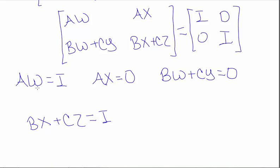So the first one I'll deal with is AW equal to I. Now I know that A is square. And the invertible matrix theorem says that if A is square and it multiplies by something to get the identity, that it is invertible. So I have that W is equal to A inverse. The fact that A inverse exists tells me my second equation. I can multiply both sides by A inverse and get that X is 0.